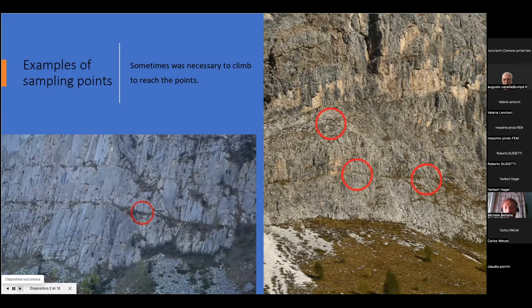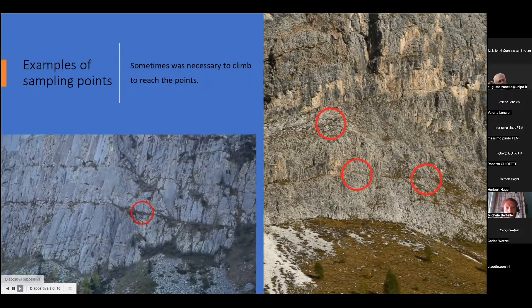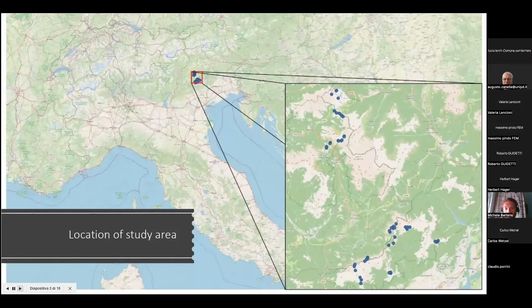Here I have an example of the sampling points of the research. As you can see, they are just little vegetational areas inside of rock walls. Here is the study area, the location of the study area.